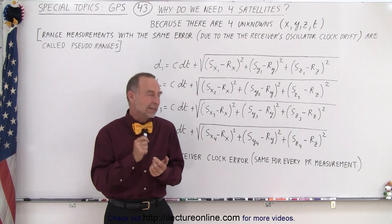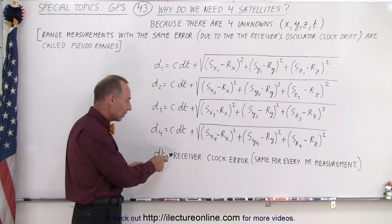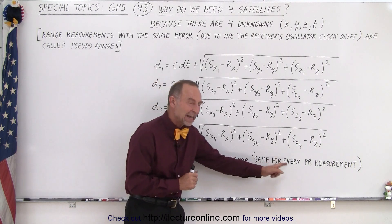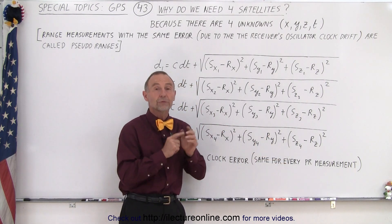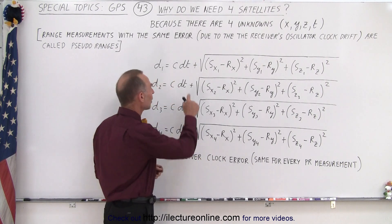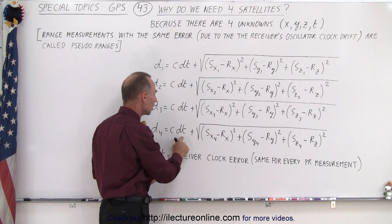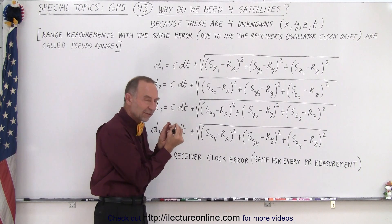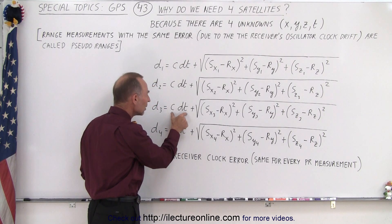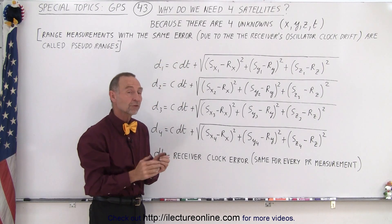The key to understanding that is to realize that the receiver clock error is the same for every pseudo-range measurement to the four satellites. Since that's the same, the error in the clock times the speed of light gives us the distance error, and this quantity will be the same for every one of the four measurements to the four satellites.